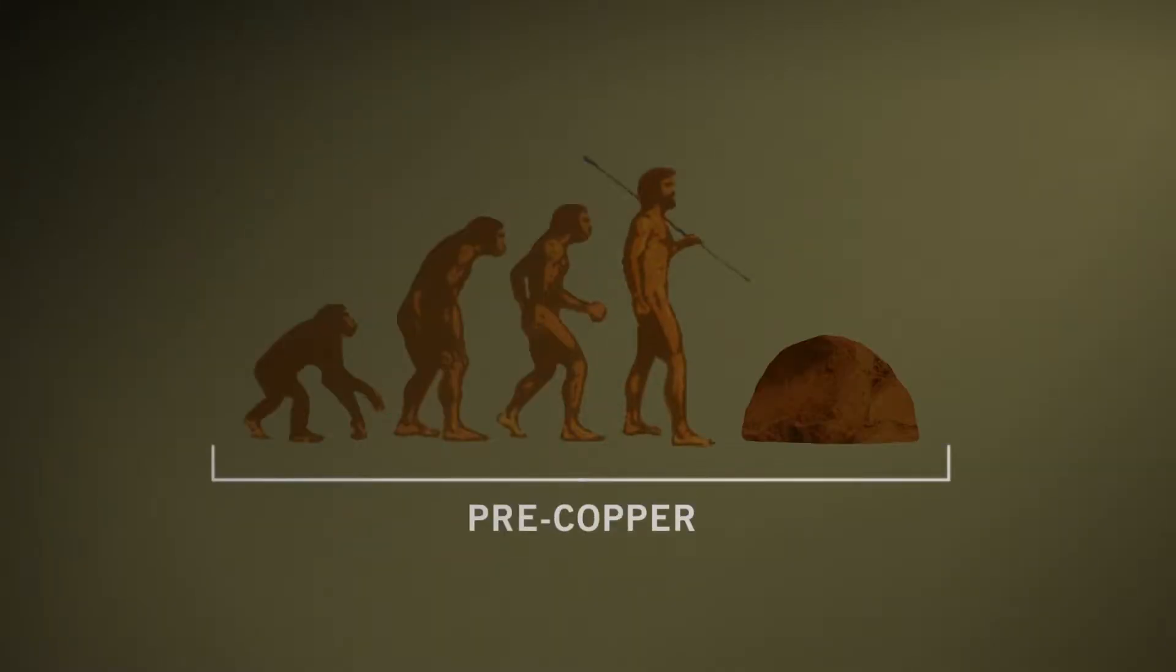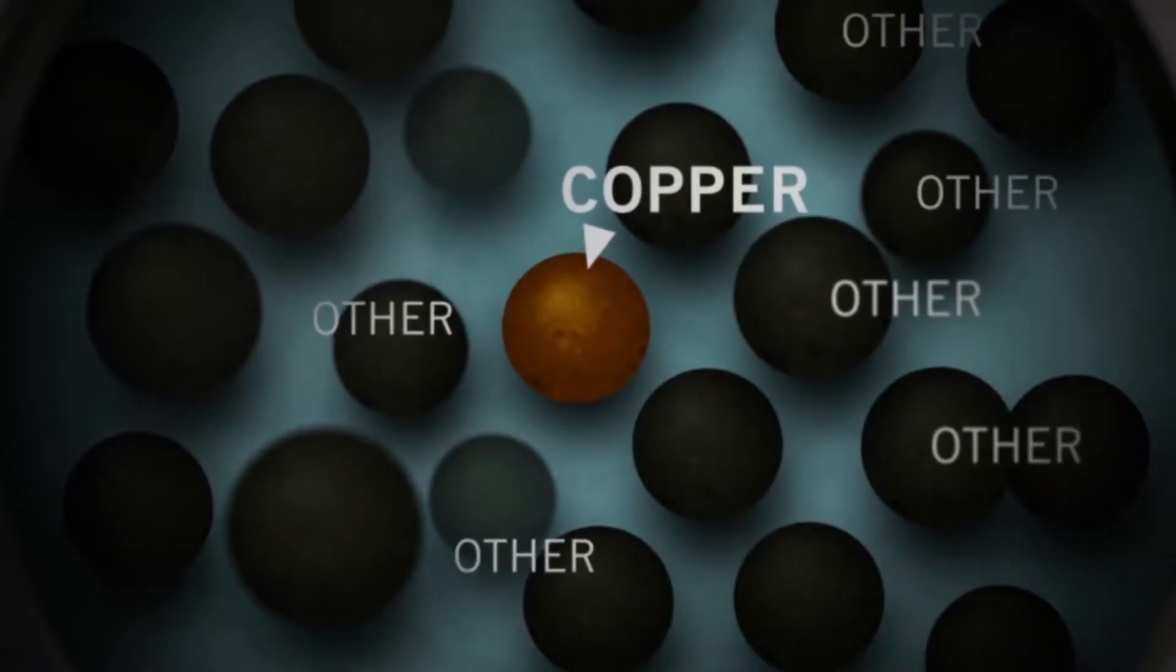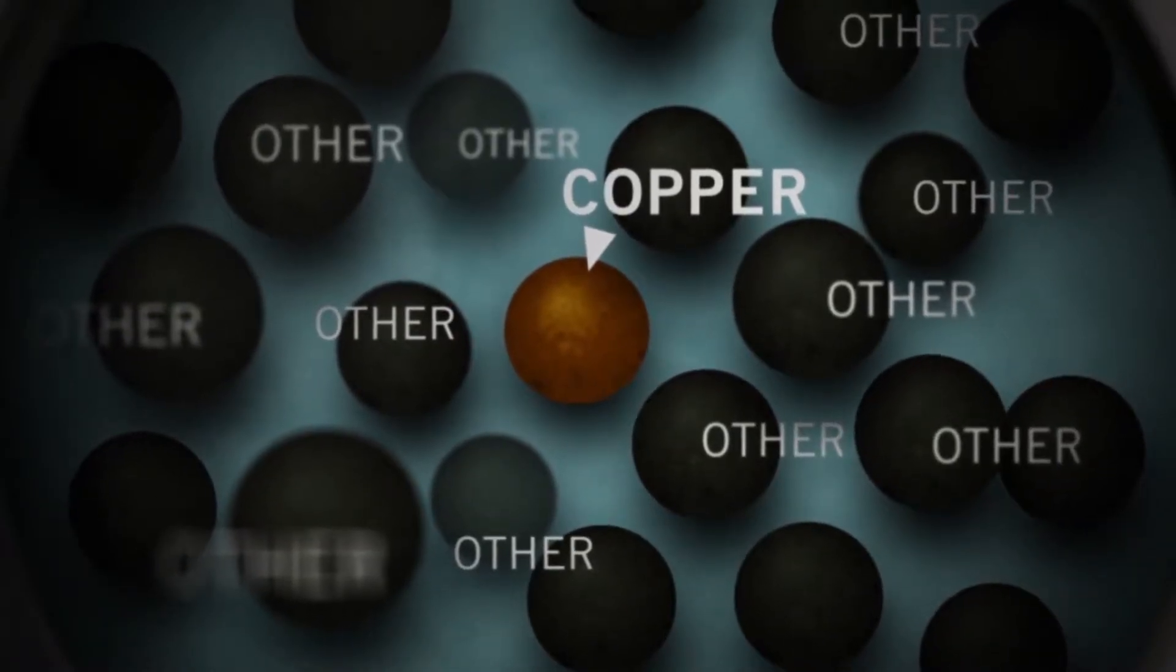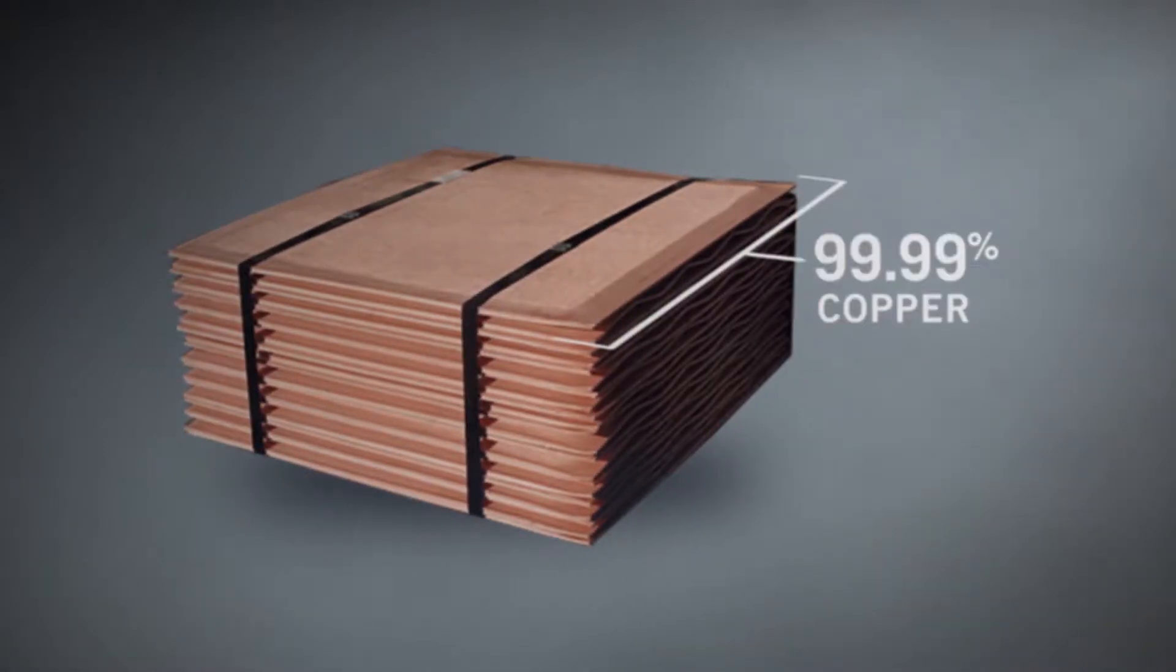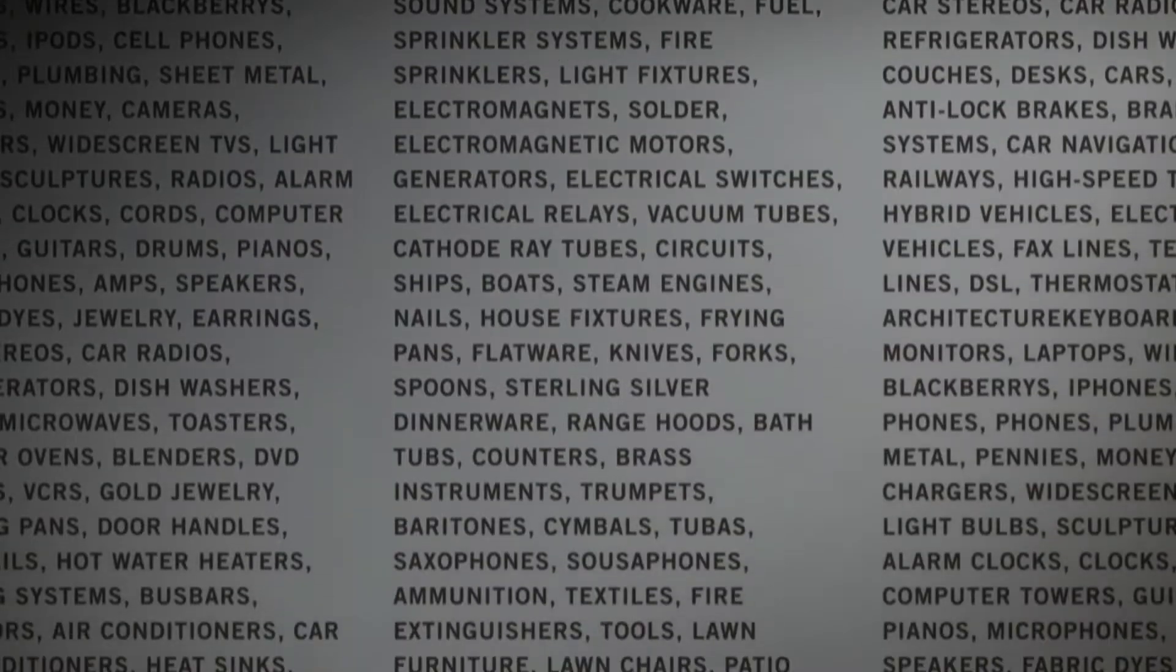So now that you know how important copper is, let's talk about how it's made. Or to be more accurate, let's talk about how it goes from this, a basic element mixed in with a bunch of other minerals and garden-variety rock, to this, 99.99% pure copper cathodes manufacturers use to make that long list of stuff you depend on every day.